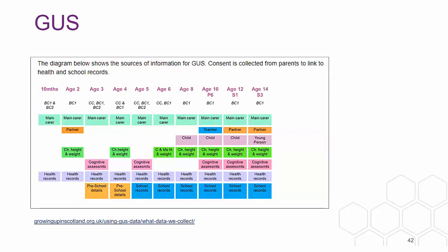This diagram illustrates the sources of information that feed into GUS: health and school records linked to it, the main interview, and biomedical measures shown in different colours.